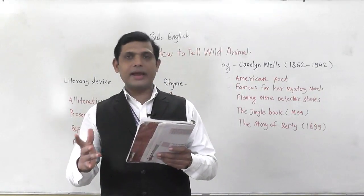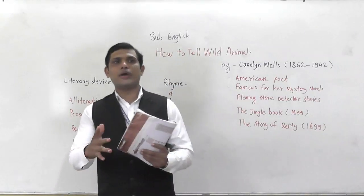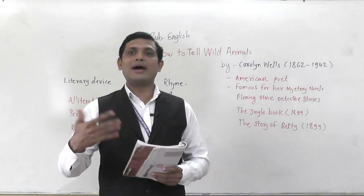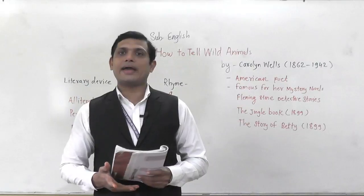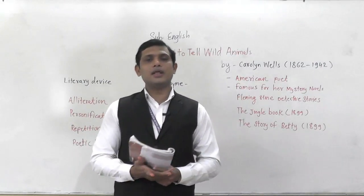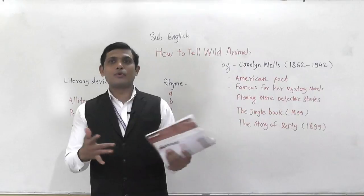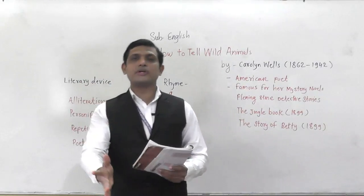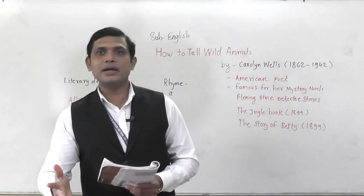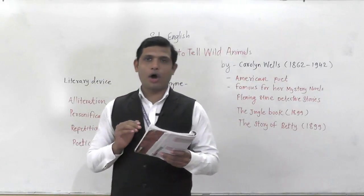So in the first stanza the poetess gives a description of the Asian lion — a very big animal that will not wait. As soon as he notices you, he will advance and attack you, and by the roar of that animal you will feel you are going to die. You have to understand that this is nothing but an Asian lion.